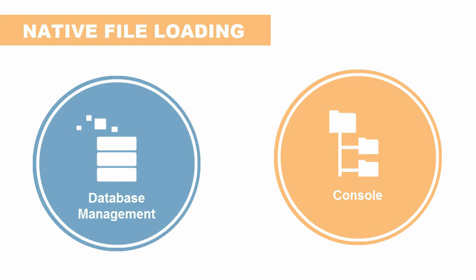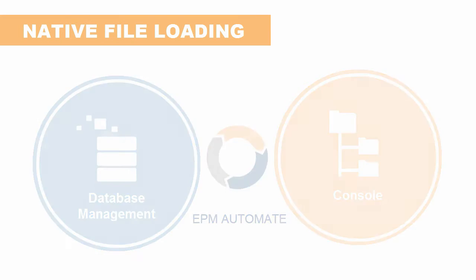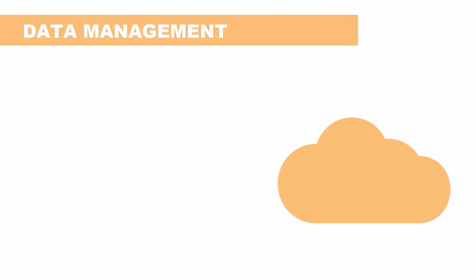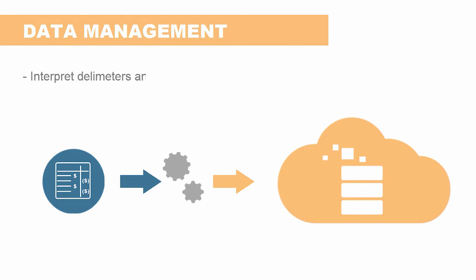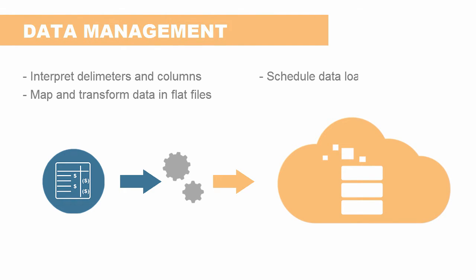You can automate load processes using the EPM Automate Utility. To load a data file that isn't formatted for native loading — for example, flat file extracts from your general ledger or other systems — use Data Management to map the file to the target Profitability and Cost Management application. Data Management enables you to interpret delimiters and columns, map and transform data in flat files, schedule data loads, and drill through to data sources.